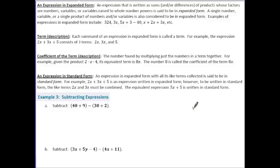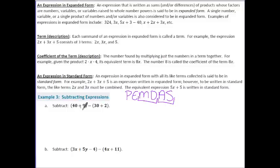Let's take a look at Example 3. I'm asked to subtract (40 plus 9) minus (30 plus 2), where 40 and 9 are grouped together and 30 and 2 are grouped together. Following order of operations — PEMDAS — parentheses come first: 40 plus 9 gives 49, and 30 plus 2 gives 32. I don't have multiplication or division, but I do have subtraction: 49 minus 32 leaves me with 17.